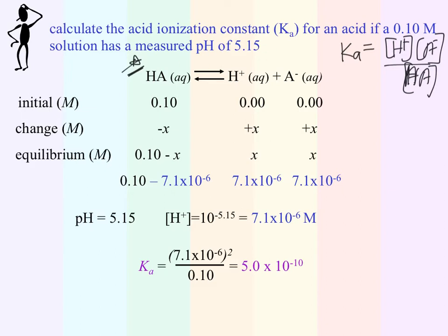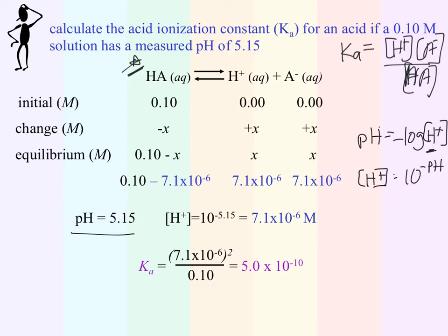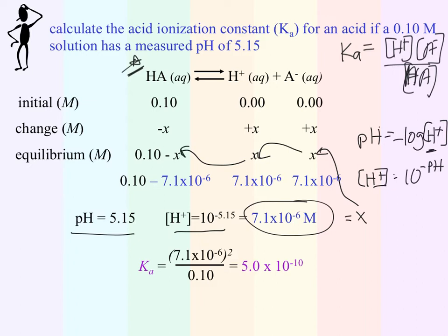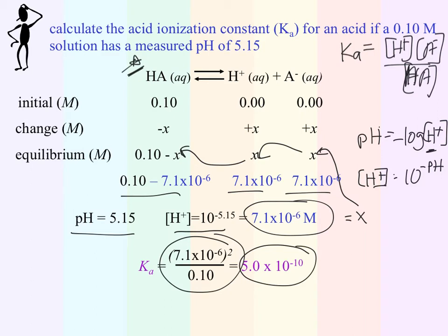In this situation I don't have a Ka to solve for my X value in the prototypical way. However, I do have pH. Remember pH is calculated by taking the negative log of H plus. So in order to calculate my H plus concentration, we take 10 to the negative pH. When we do that, 10 to the negative 5.15 gives us our H plus concentration at equilibrium, because that's when I measured my pH. If I know H plus, I know my X value, and I can plug into the appropriate locations to get my equilibrium concentrations. I then plug those into my equilibrium expression, divide by 0.10, and I get the Ka value for this specific acid.